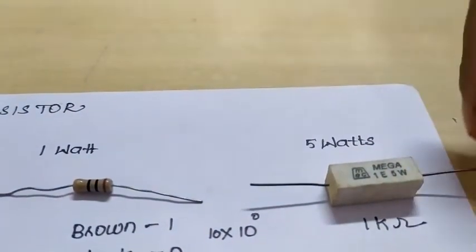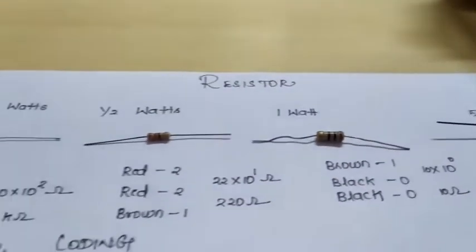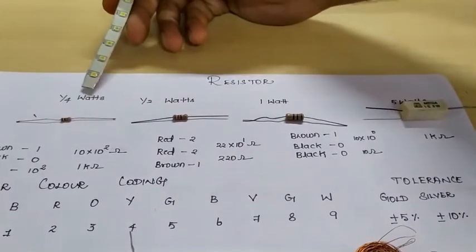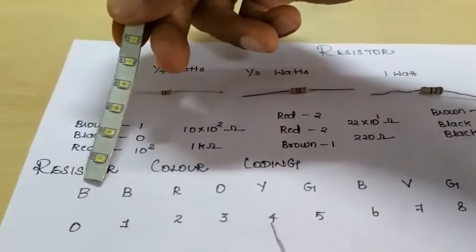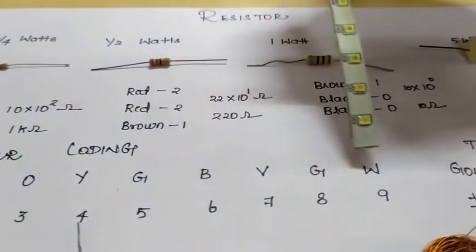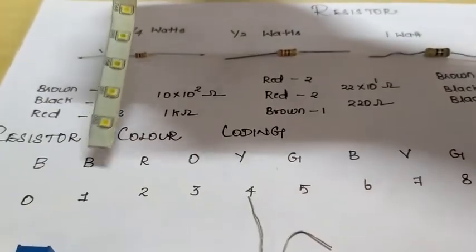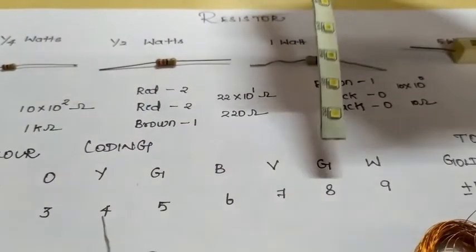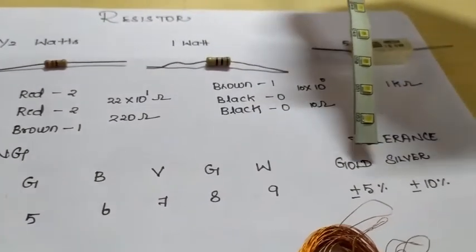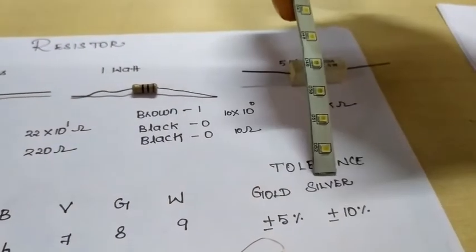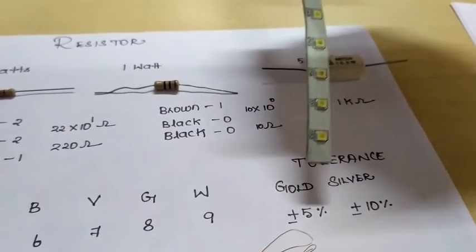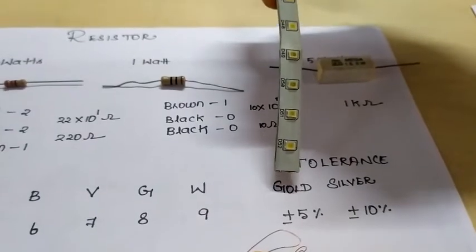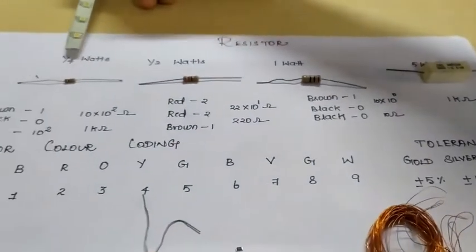All these resistors have similar ratings in terms of one kilo ohm. As you know, the color coding of resistor is BB ROY Great Britain Very Good Wise. B stands for black, brown, red, orange, yellow, green, blue, violet, gray, and white. We have the tolerance band like gold and silver which is five percentage and ten percentage. Indian standard for error is five percentage so we use gold color for all the resistors.